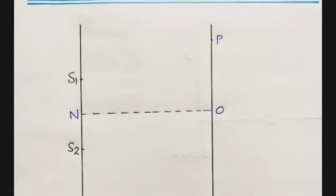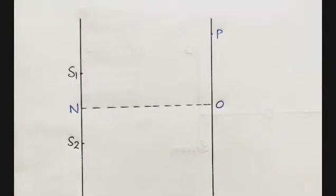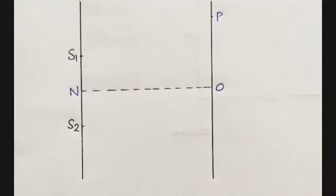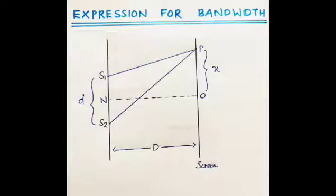We consider two coherent sources S1 and S2 of wavelength lambda. There is a screen placed at a distance capital D away from the sources, and O is the central point of the screen. NO is the perpendicular bisector drawn from S1 and S2. The distance between the sources S1 and S2 is taken as small letter d. We consider another point P on the screen which is x distant away from the center O.